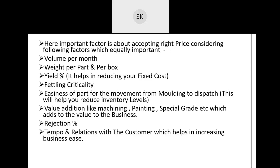The important factor here is accepting the right price, considering several equally important factors. What should be the criteria for accepting price? First is the volume per month — how much tonnage of business will come through that particular part is very important. Weight per part and per box is also important so that you can optimize or utilize your capacity. Yield percentage is very important as it will help you to reduce your fixed cost and increase good casting conversion from your liquid metal. Fettling criticality is also going to be a crucial factor because if fettling is critical, it takes more time, your resources get stuck up, your inventory gets piled up, and on-time deliveries will not happen.